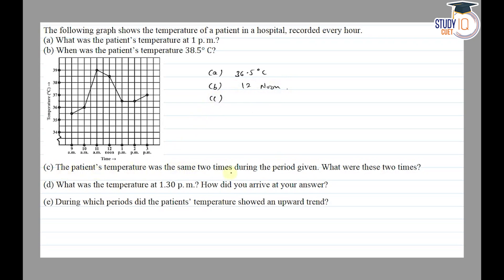Part C asks: the patient's temperature was the same two times during the period given — what were these two times? We need to find when the patient's temperature is the same. We can see the temperature increases and then decreases, and at two points it is the same. So the two times are 1 PM and 2 PM.